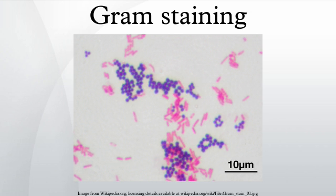After decolorization, the Gram positive cell remains purple and the Gram negative cell loses its purple color. Counter stain, which is usually positively charged safranin or basic fuchsin, is applied last to give decolorized Gram negative bacteria a pink or red color. Some bacteria, after staining with the Gram stain, yield a Gram variable pattern — a mix of pink and purple cells are seen. The genera Actinomyces, Arthrobacter, Corynebacterium, Mycobacterium, and Propionibacterium have cell walls particularly sensitive to breakage during cell division, resulting in Gram negative staining of these Gram positive cells.